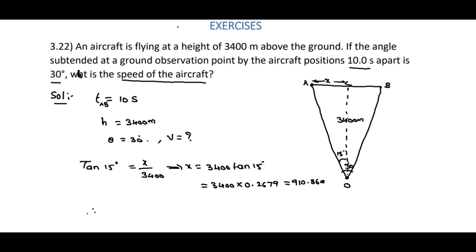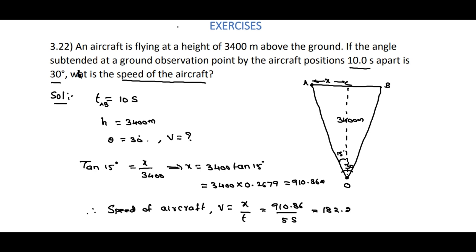Therefore, the speed of the aircraft V = X / time = 910.86 m / 5 s = 182.2 meters per second. Note that the full path A to B takes 10 seconds, so A to C is only 5 seconds. The speed of the aircraft is 182.2 m/s. These are the solutions for 3.20, 3.21, and 3.22.